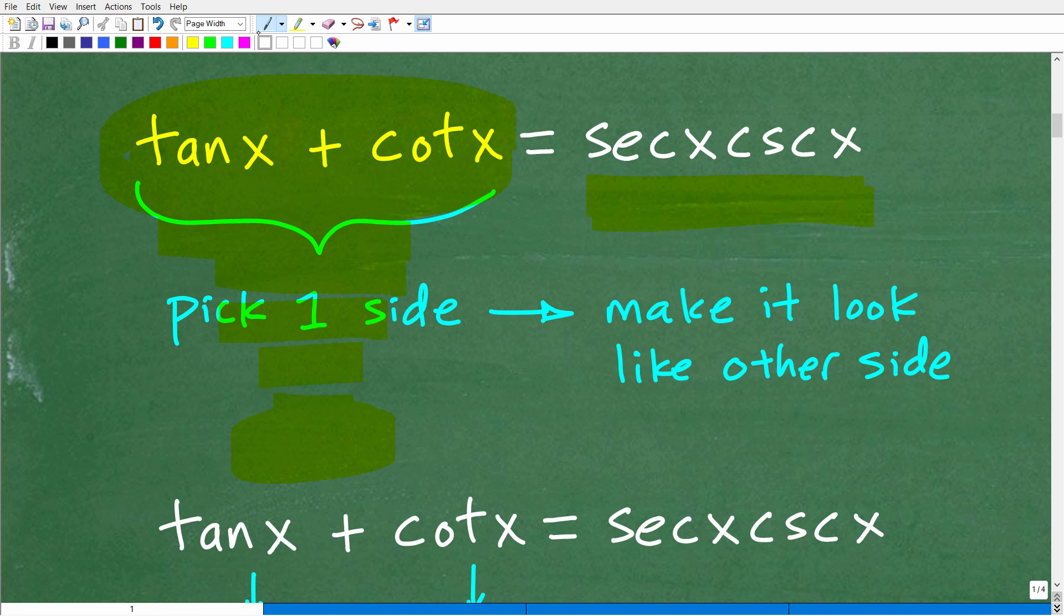Now, what do you need to do in order to verify trigonometric identities? Well, you need to have, first of all, you need to have strong algebra skills. That's number one. Number two, you need to have excellent notes, detailed notes on all the fundamental identities that you already learned, okay? So if you don't have those notes, you need to get those notes available to you.